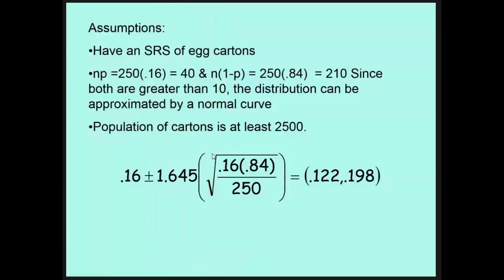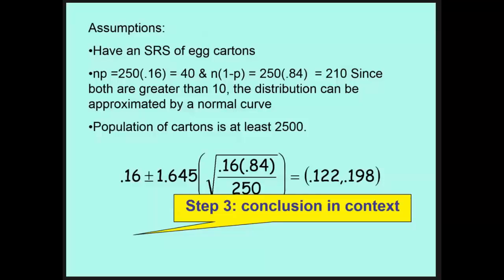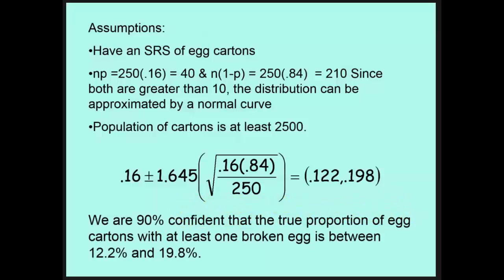So the last thing that we need to do is interpret, put it in context. So we are 90% confident that the true proportion of egg cartons with at least one broken egg is between 12.2% and 19.8%.